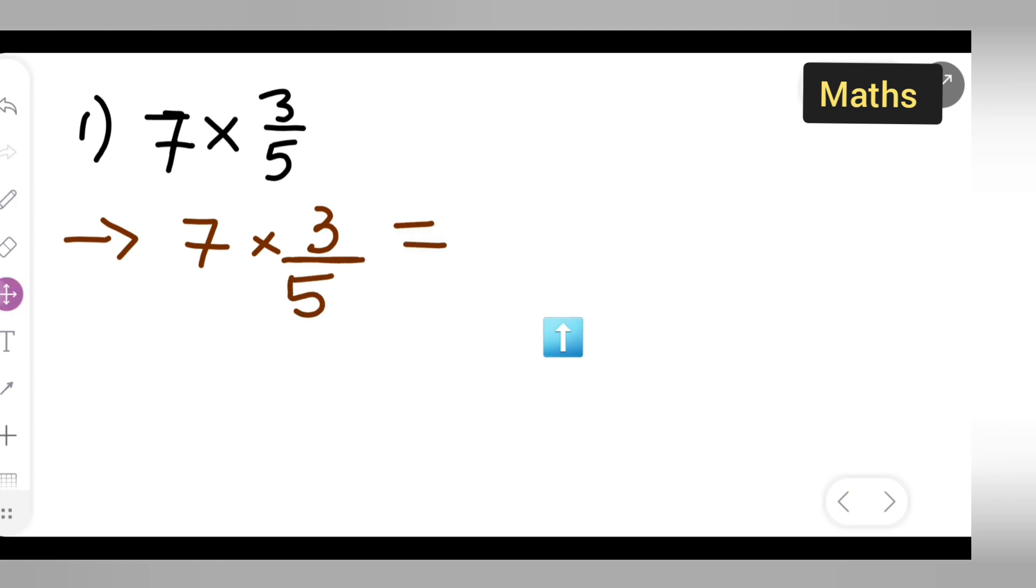Now can you all see over here the denominator is not given for this one but denominator is given for this one. Here only we have the numerator 7. So what we are going to do is let us consider here 1 is there. Okay, because 7 upon 1 is nothing but 7 itself.